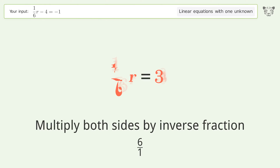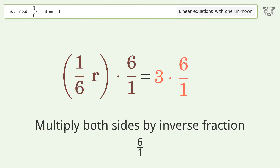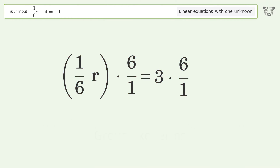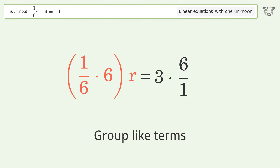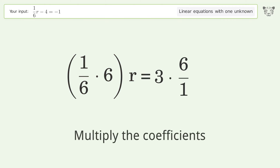Isolate the R. Multiply both sides by the inverse fraction 6 over 1. Group like terms.